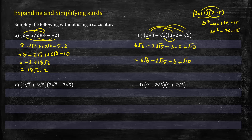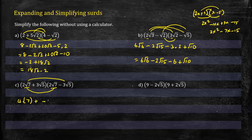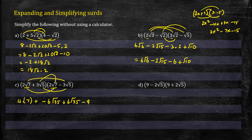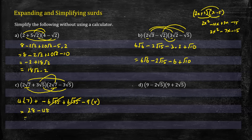In question c and d we can use a quick method, but let's do question c the long way first. We have (2√7 - 3√5)(2√7 + 3√5). Expanding: 2√7 times 2√7 = 4 times 7 = 28. Then 2√7 times negative 3√5 = negative 6√35, and 3√5 times negative 3√5 = negative 9 times 5 = negative 45. The two middle terms cancel, leaving 28 minus 45, which gives negative 17.